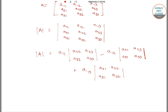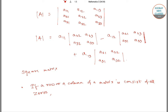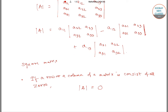It is important to note that only square matrices have determinants. Matrices which are not square do not have determinants. Also, if a row or a column of a matrix consists entirely of zeros, then the determinant of that matrix is equal to zero.